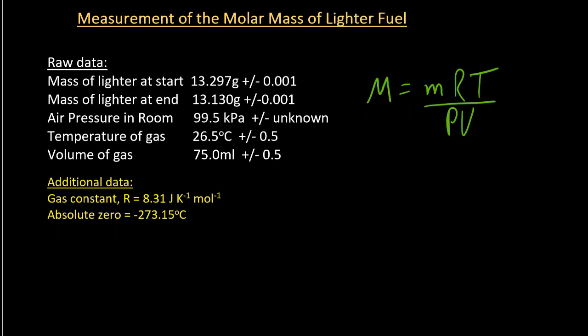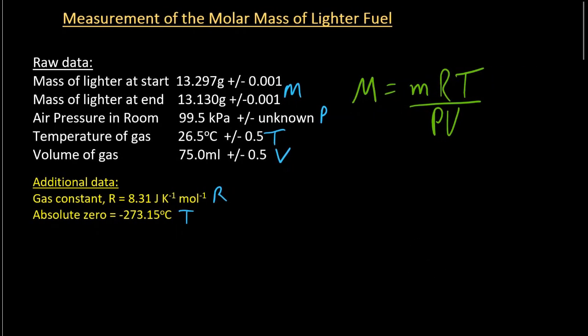Now the data does need a little bit of crunching before we put it into this equation. I need to look at the difference in mass, R and T. Temperature's got to be in Kelvin. Pressure's okay as kilopascals and volume has to be in decimeters cubed. Okay, so let's do some of those conversions and calculations.